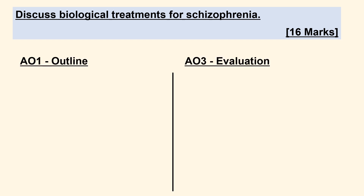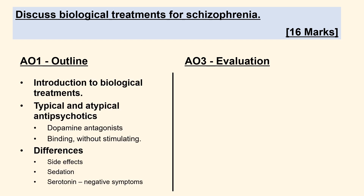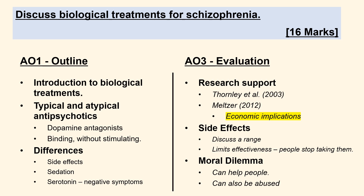In my AO1, I'm just going to talk about antipsychotics. I'm not going to completely split them into typical and atypical, but rather I'm going to start by talking about the similarities of both because when it boils down to it, they both work in very similar ways. I'm then going to branch off and talk about the differences, with the main focus being on the sedation effect for the typical antipsychotics and the effect on serotonin for the atypical antipsychotics.